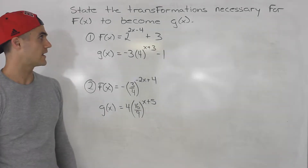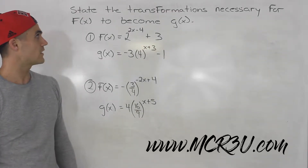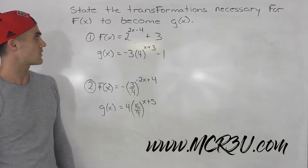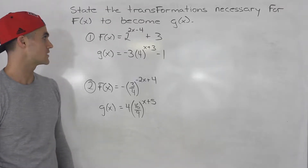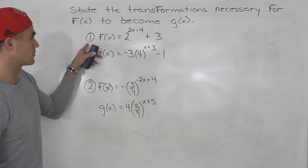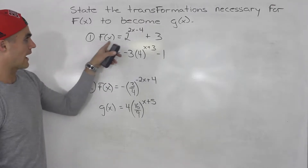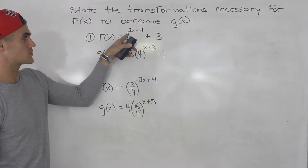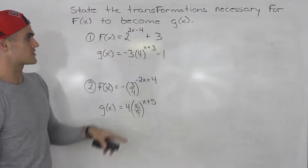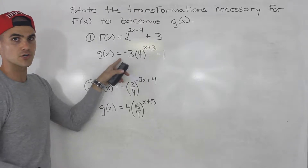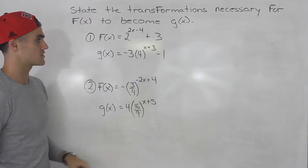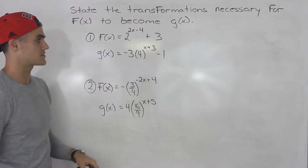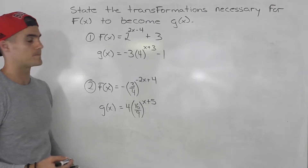What's up everybody, welcome back. In this video we have the state transformations necessary for f of x to become g of x. We have two scenarios that we're going to deal with. Starting with number one, how does this function 2 to the power of 2x minus 4 plus 3 become g of x, which is negative 3 times 4 to the power of x plus 3 minus 1.